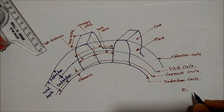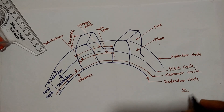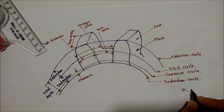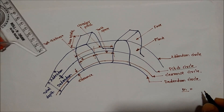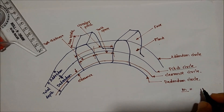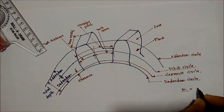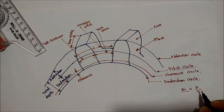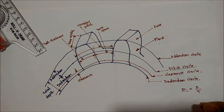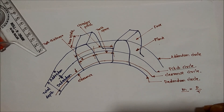The module M is the ratio of the pitch circle diameter in millimeters to the number of teeth on the gear — that is, the ratio of the pitch circle diameter to the number of teeth. The module is an important parameter for a gear.